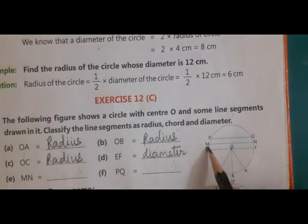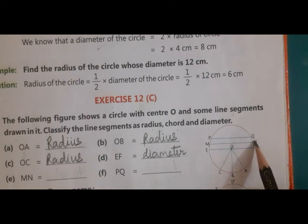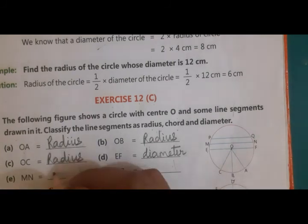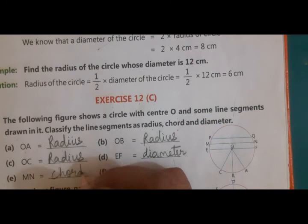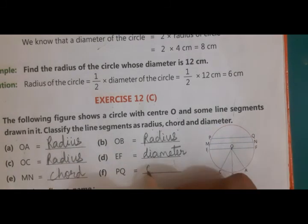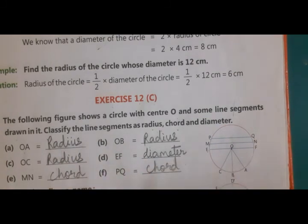MN is not passing from the center, but it is passing from one end of the circle to other end of the circle. So it is known as a chord. PQ is also a chord.